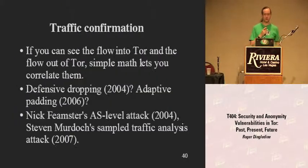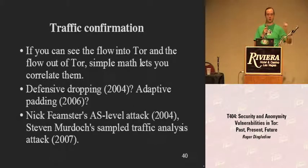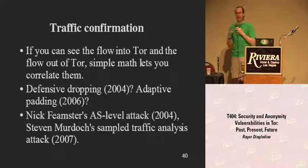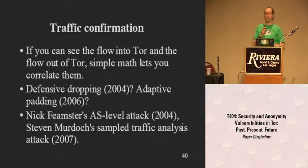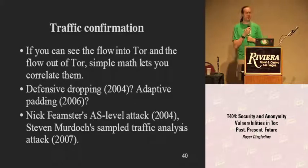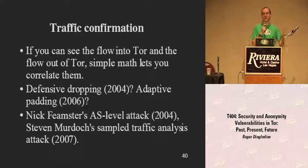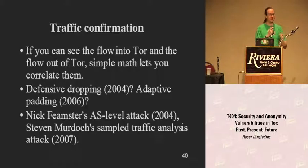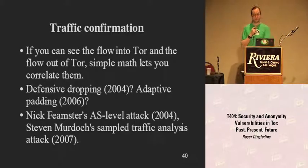A few last thoughts on research. Traffic confirmation is the big attack against Tor. If you can see the connection into Tor and the connection out of Tor, simple math lets you look at the patterns and say these are the same flows — this Alice is talking to this Bob. There are research defenses like defensive dropping and adaptive padding, but they don't really work because the attacks keep getting better. Stephen Murdoch had a paper showing that internet exchange points only need to sample one in every thousand packets to still conduct a successful traffic confirmation attack quickly, even on small flows. That's really scary.